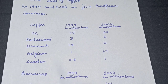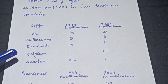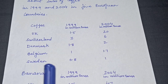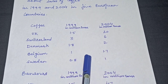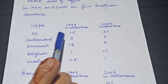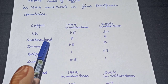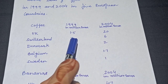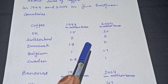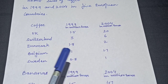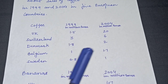Here is the first table which represents the sale of coffee in UK, Switzerland, Denmark, Belgium, and Sweden. What we can see is that there is an increase in the sale of coffee in all 5 countries. In UK it increased from 1.5 to 20 million euros. In Switzerland it doubled. In Denmark and Sweden the increase is only 0.2 million. And in Belgium also there is a negligible increase, from 1 to 1.7.